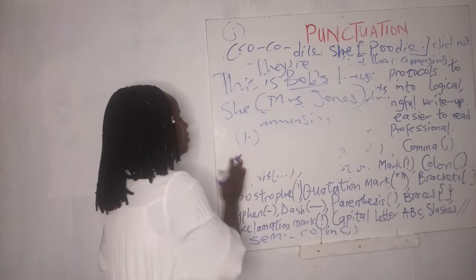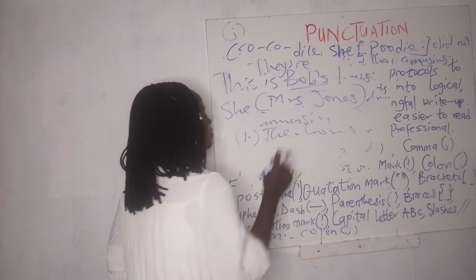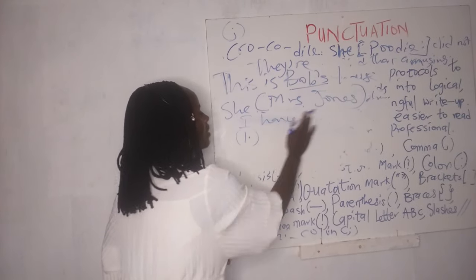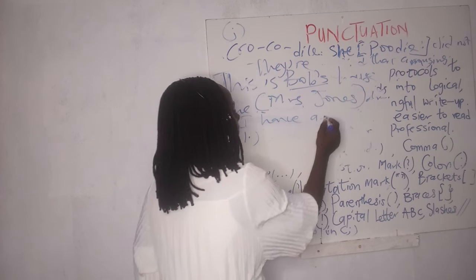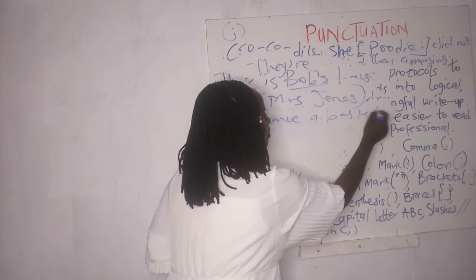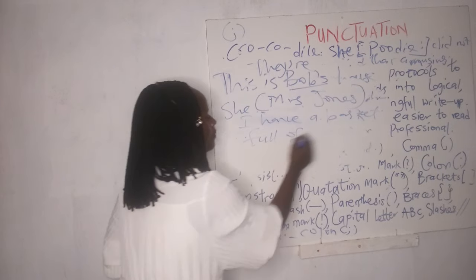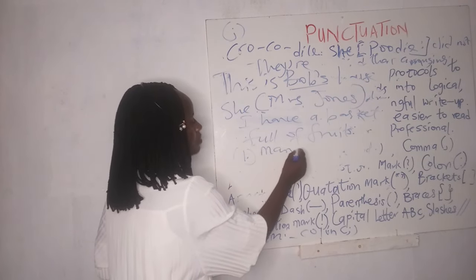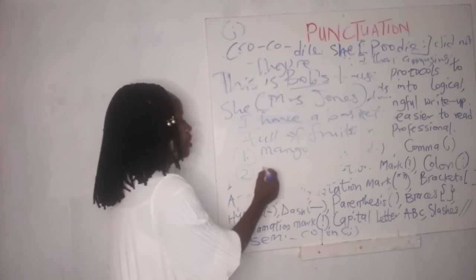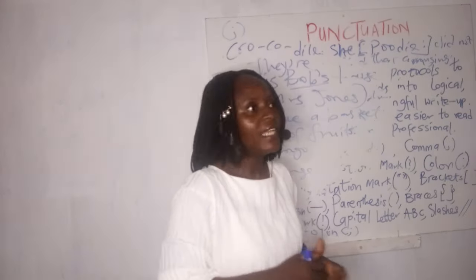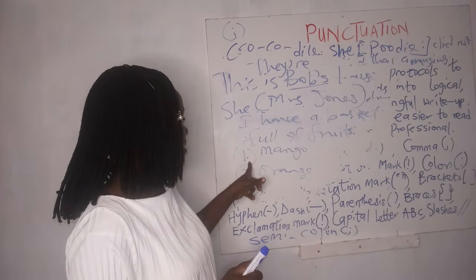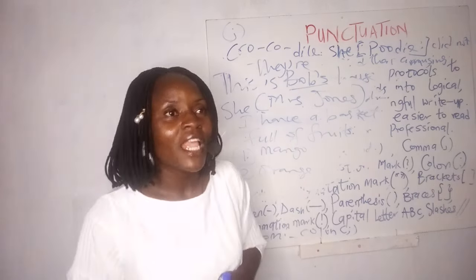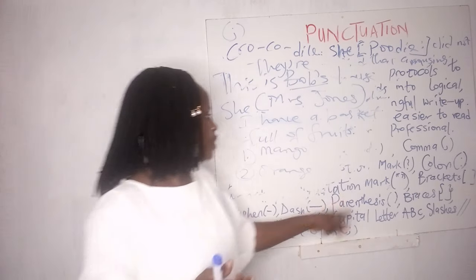You also use your parentheses to organize a list of items. For example: 'A basket full of fruits — fruits: (1) mango, (2) orange.' You use the round bracket to number items in the list. I believe you are following me and the class is not boring.